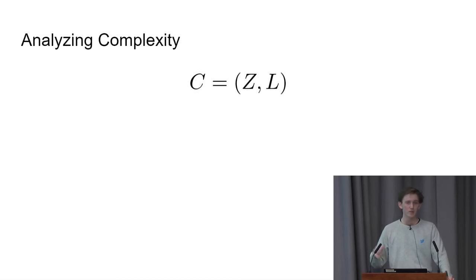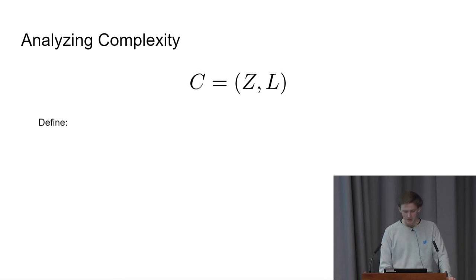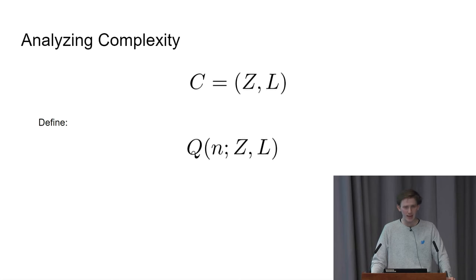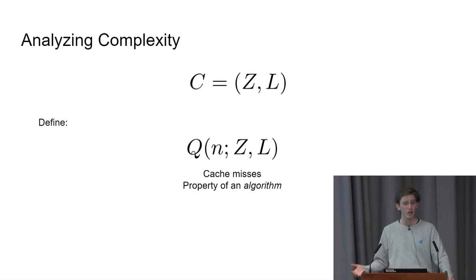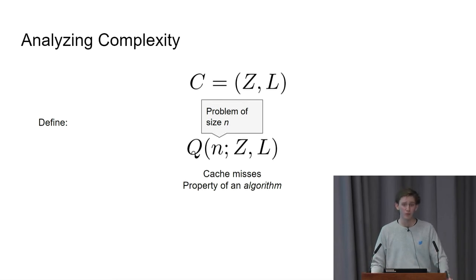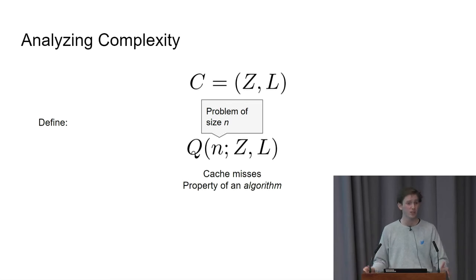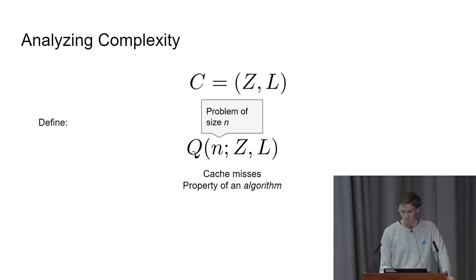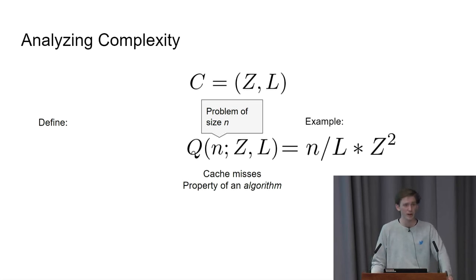Before we get into example algorithms, let's more formally define how we're going to look at cache misses. I'm going to define Q, taking in parameters N, Z, and L, as giving the number of cache misses as a property of an algorithm. It takes in Z and L, the parameters of the cache, and N, the problem size. For sorting, N might be the size of the array; for matrix multiplication, N squared for an N-by-N matrix. Q is just a function, so we might have something like N over L times Z squared.